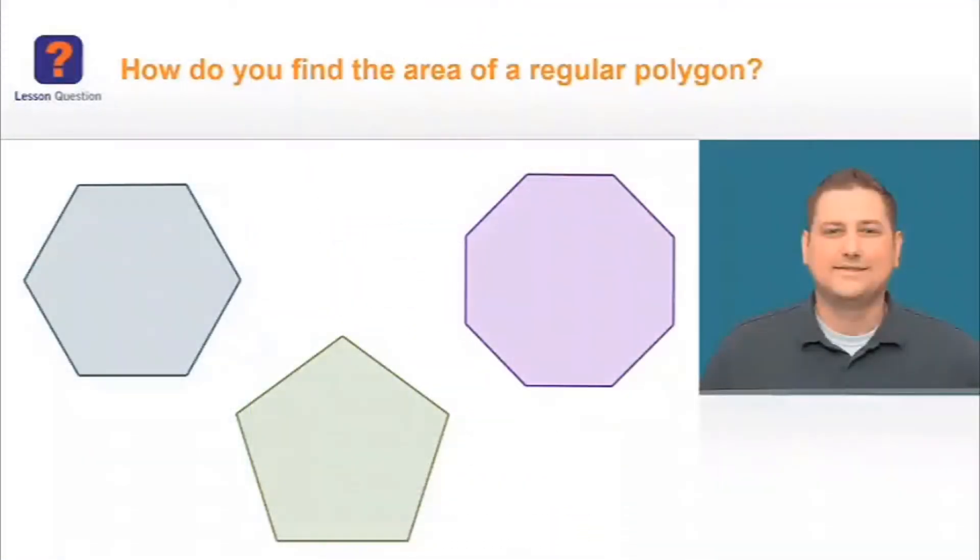Now, let's jump to another lesson. In this lesson, we're working to answer the question: how do you find the area of a regular polygon? And by now, you should be able to separate a regular polygon into congruent isosceles triangles.